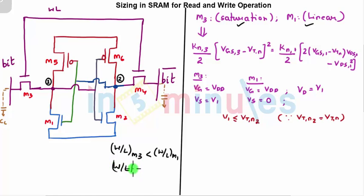W by L of M3 upon W by L of M1 should be less than 1. Let's see. We will try to get this equation in terms of W by L very shortly. M3 is in saturation, M1 is in linear. I have equated the values of both their currents. I'll quickly tell you why.